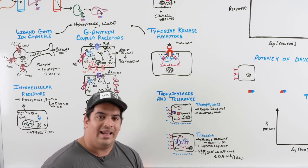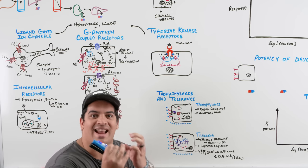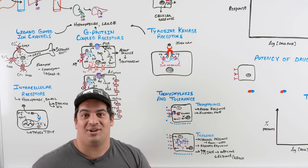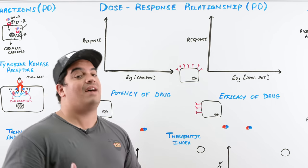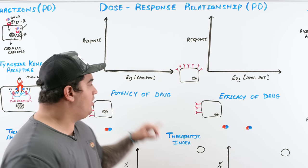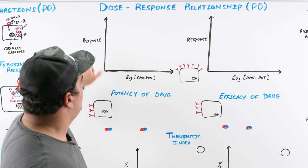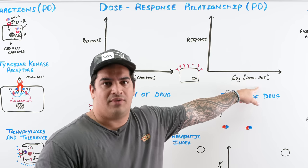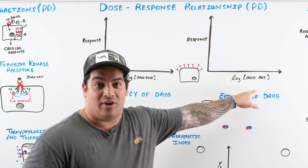Now we discuss the dose-response relationship. When a drug binds with a receptor, we want to know the affinity between them — the strength of the bond — and the maximum clinical effect that interaction can produce. On a dose-response graph, the x-axis shows drug concentration or dosage on a logarithmic scale, and the y-axis shows the response or effect.